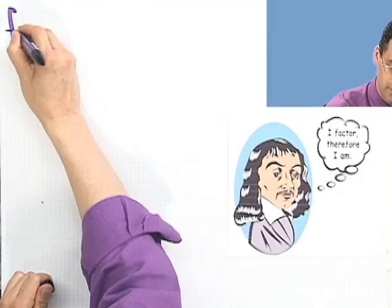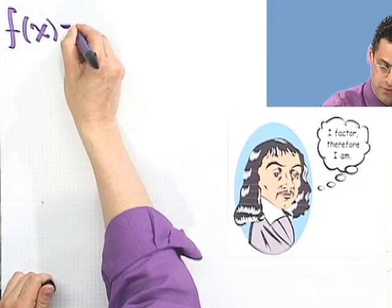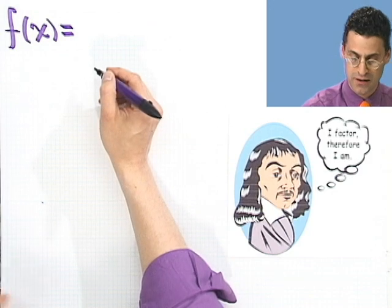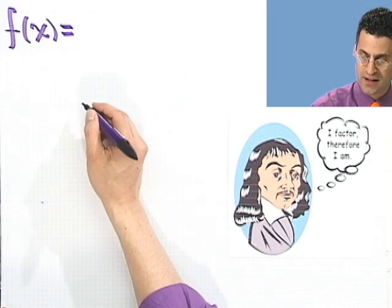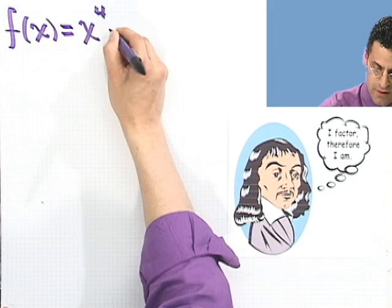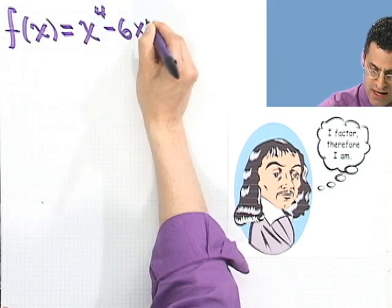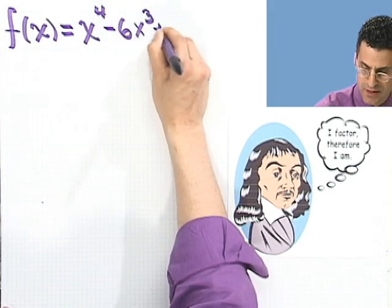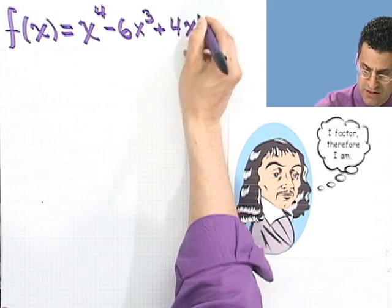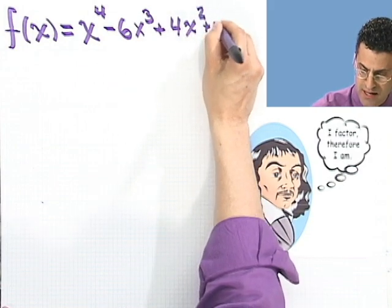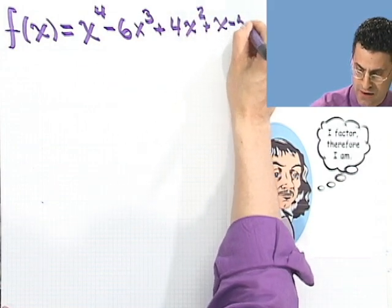And then you look at the sign changes. So let's do an example here, and I'll show you exactly how Descartes' rule of sign works. So suppose I have a polynomial, and it equals this: x to the fourth minus 6x cubed plus 4x squared plus x minus 5.